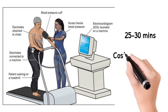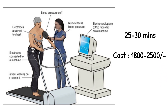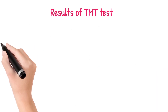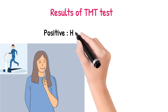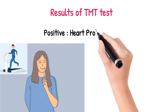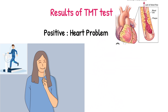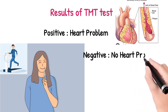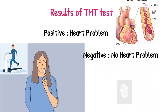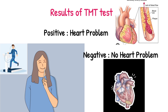The test usually takes at least 25 to 30 minutes, and the cost will be around 1800 to 2500 rupees. Coming to the results: we can get a positive or negative result. A positive test means there are chances of angina and a lack of adequate blood supply to the heart. A negative result means the heart is healthy and there is adequate blood supply — so there is no problem.